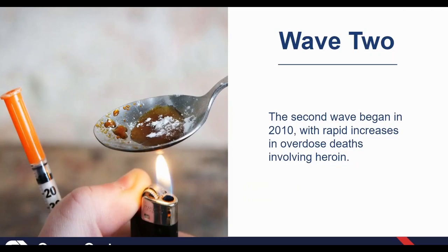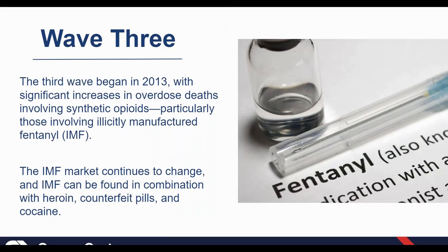Wave two began around 2010, with a rapid increase in overdose deaths involving heroin. Heroin goes back further than that, but we really saw an uptick in deaths. One reason: many veterans who came back from wars got addicted to prescription medications, and when prescriptions were no longer being filled, some moved to heroin. Wave three is really when synthetic opioids started to play a big role in how patients were getting their opioids.